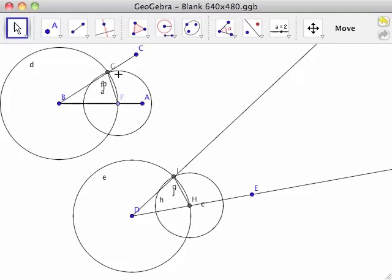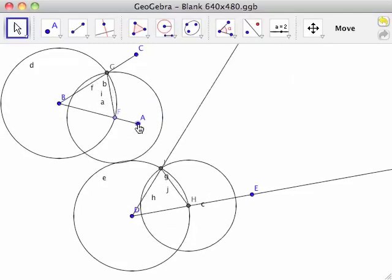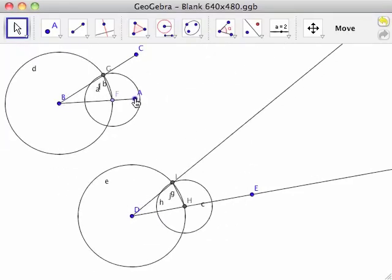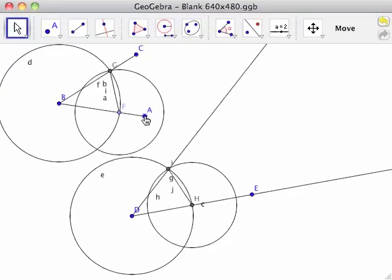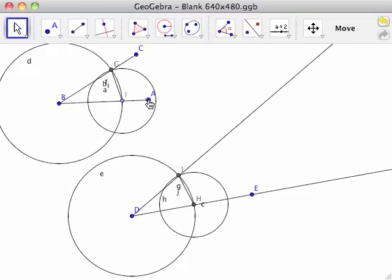Moving point A can change angle B as well as the radii of circles D and F. Notice how angle D reflects the changes made to angle B.